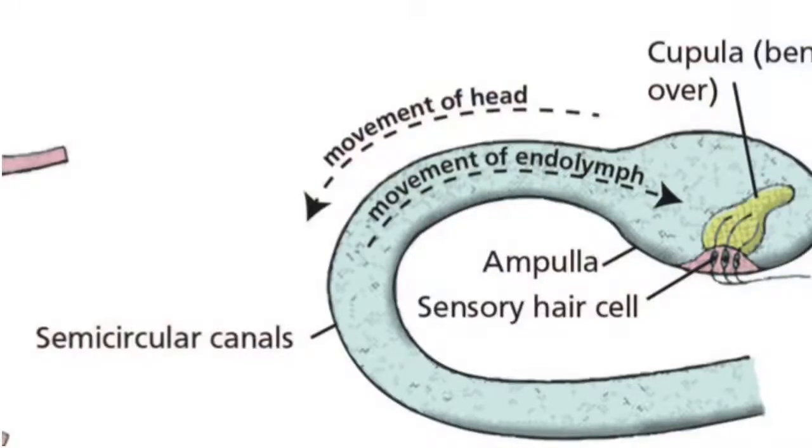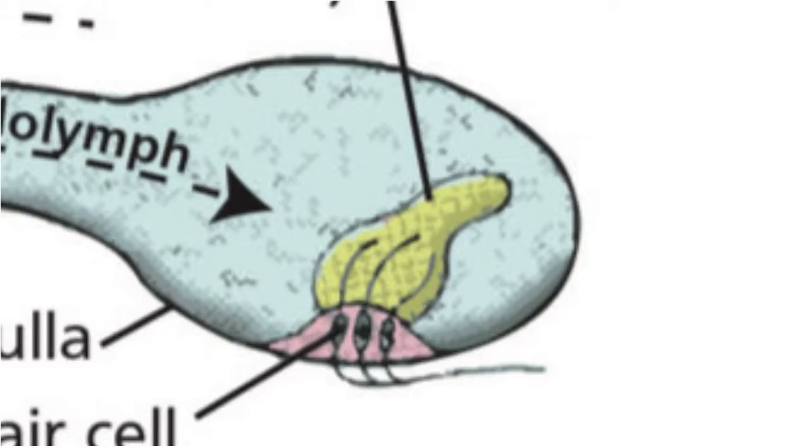Vestibular illusion is the false interpretation of sensory information by the brain. Before understanding any of these illusions, it's important to understand how our brain falsely interprets sensory information. In our ears there are three semicircular canals filled with liquid, which sense or detect angular acceleration greater than 0.5 degrees per second squared. Inside the canals are fine hair-like cells which move as the liquid moves. This movement is sensed and sent to the brain.